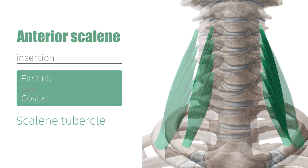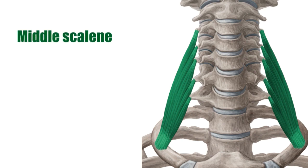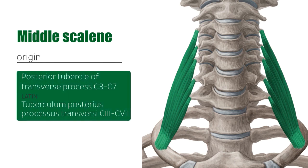A bit further behind, we find the middle scalene muscles. They originate at the posterior tubercles of the transverse processes of C3 all the way to C7, as you can see here on the images — so the posterior tubercles of the transverse processes from the third cervical vertebrae all the way to the seventh cervical vertebrae.